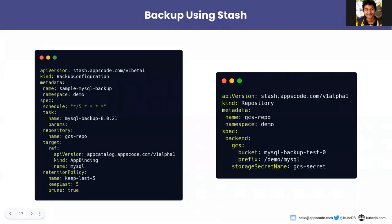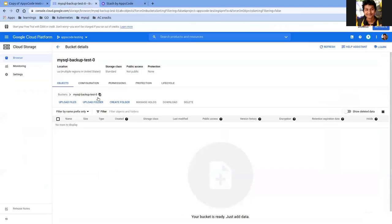In the retaining policy we are telling Stash to keep the last five backups. The repository is named 'gcs-repo', it's in the demo namespace, and in the backend we are referring to a Google Cloud Storage bucket named 'my-spell-backup-test-zero'. The prefix specifies the path where data will be stored, and for connecting to the GCS repo we are referring to a secret. This storage bucket currently has nothing in it.